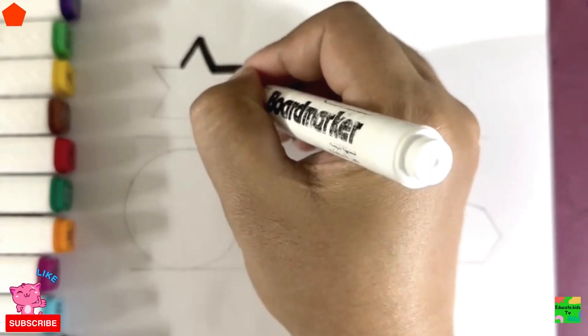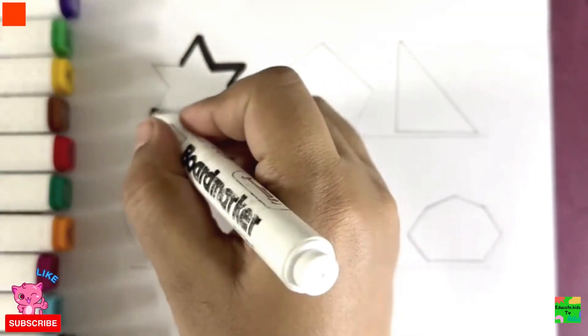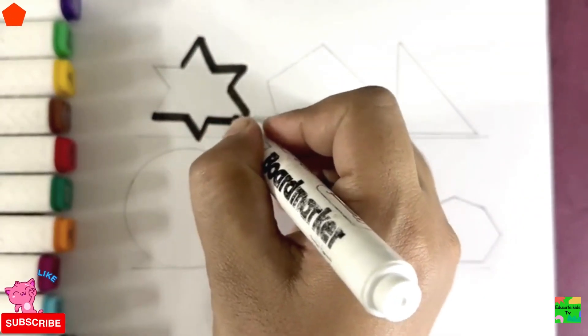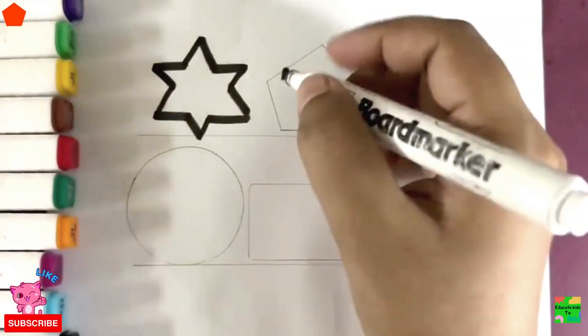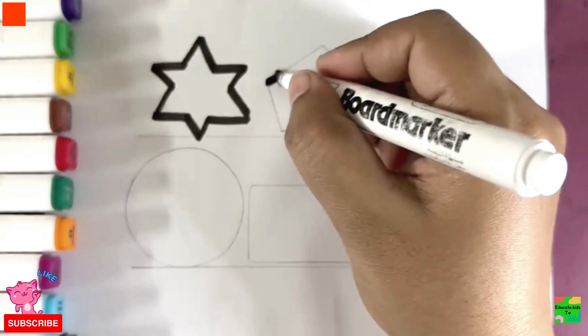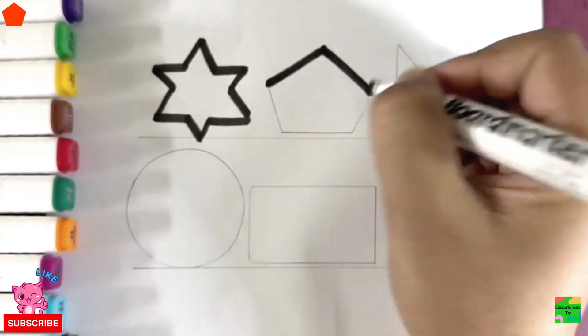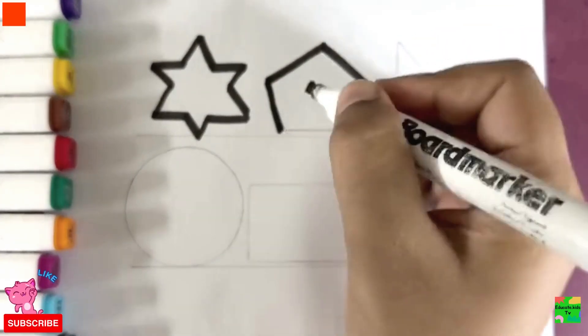This is a star shape. You can draw stars in many different shapes. Next is pentagon. Hooray!